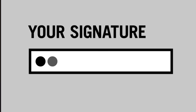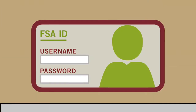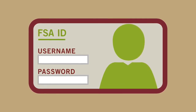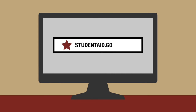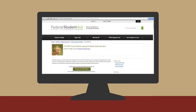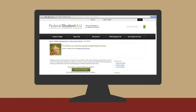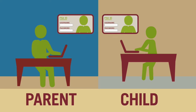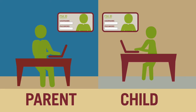If your child is providing parental information on the FAFSA, you will need to sign the FAFSA too. If you have a social security number, you can get your own FSA ID to sign the FAFSA online. Before starting the FAFSA, you and your child should go to studentaid.gov/FSA-ID to create your own FSA ID. There's a lot of helpful information about creating and using your FSA ID on that website. It's very important that you and your child each create your own FSA ID to prevent problems or delays with your child's financial aid.